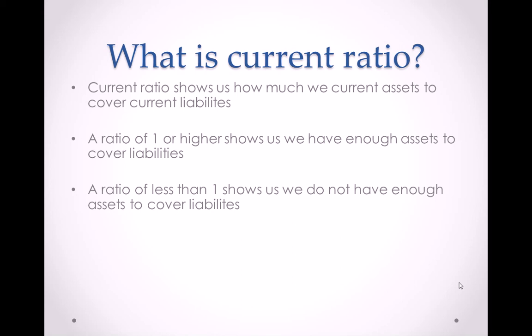The higher the current ratio, the more assets we have to cover our liabilities. For example, if we had a current ratio of 2.5, we know that we have enough current assets to cover our current liabilities two and a half times.